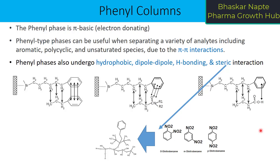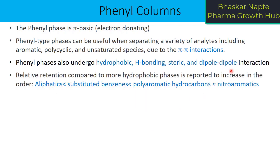So how many interactions are possible altogether on the phenyl column? The first one is pi-pi interaction, second is hydrophobic, third is dipole-dipole, fourth is hydrogen bonding, and fifth is steric interaction. The relative retention compared to hydrophobic phases increases in order: aliphatic compounds will have the least retention, substituted benzenes will have increased retention, and then polyaromatic hydrocarbons. More aromatic rings on the compound means more retention on the phenyl column, because more pi bodies means more pi-pi interaction.